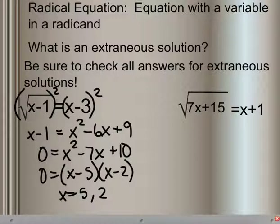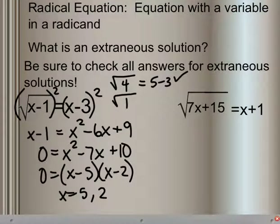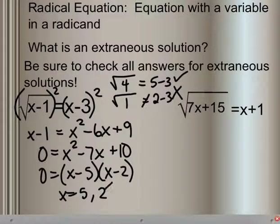When we plug them in, we need to check to make sure they make sense. For x = 5: the square root of 5 minus 1 gives us 4, and 5 minus 3 equals 2 — that works because 2 equals 2. For x = 2: the square root of 2 minus 1 gives us 1, and 2 minus 3 equals negative 1. But 1 doesn't equal negative 1, so that doesn't work. Meaning we have to get rid of 2 as a possible solution, and we just have one solution: x equals 5.